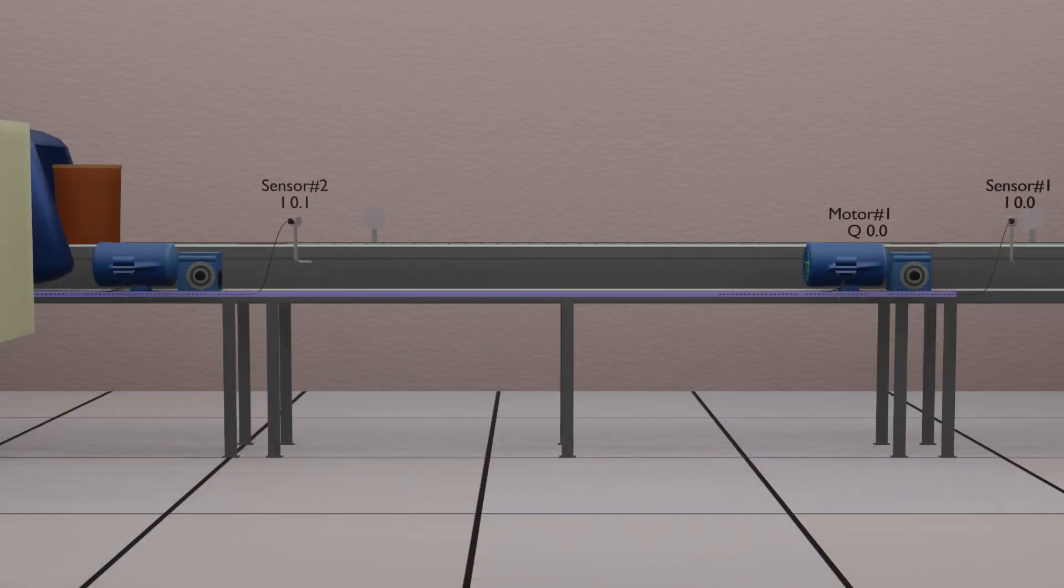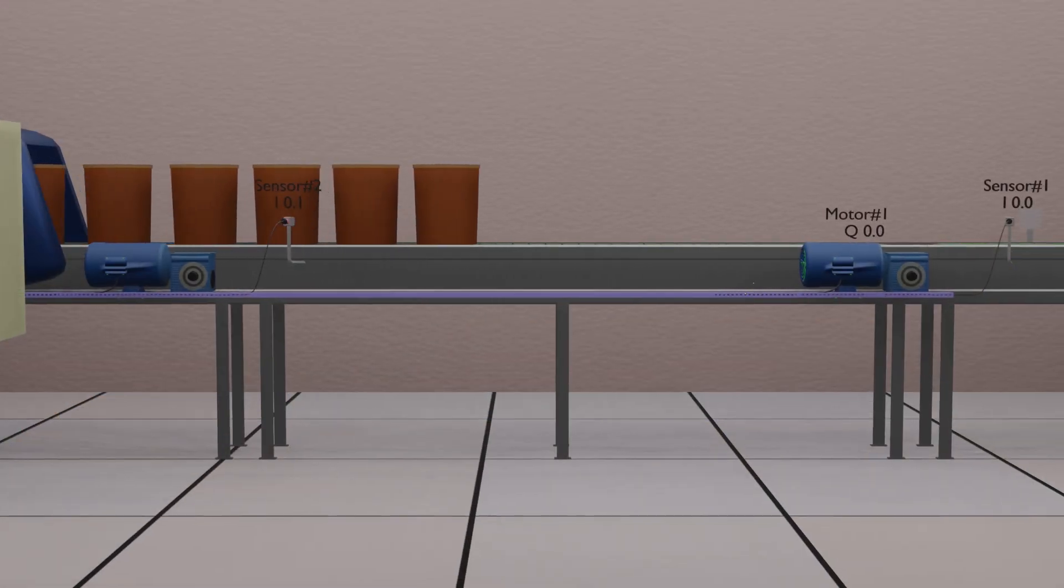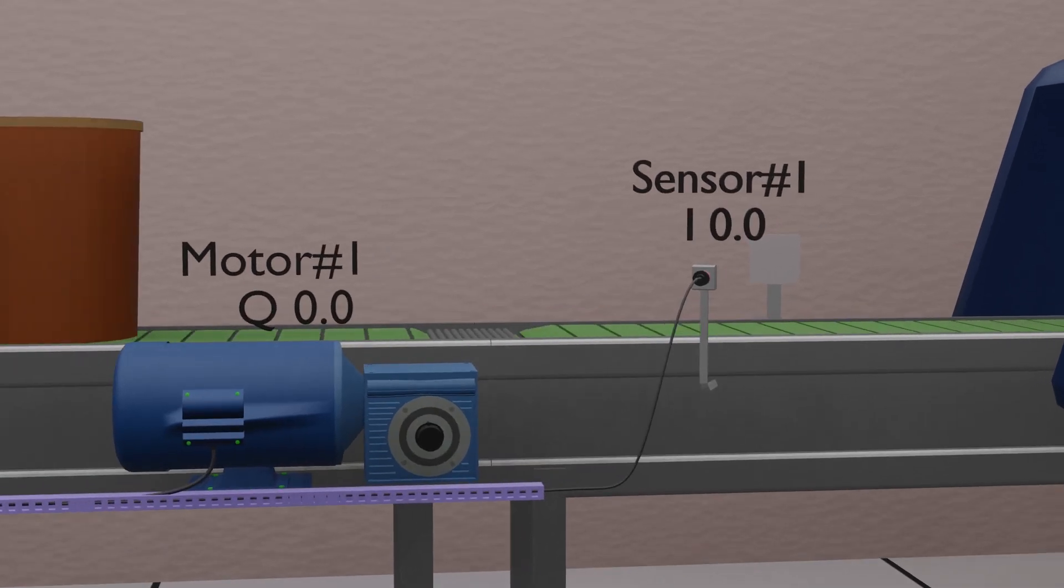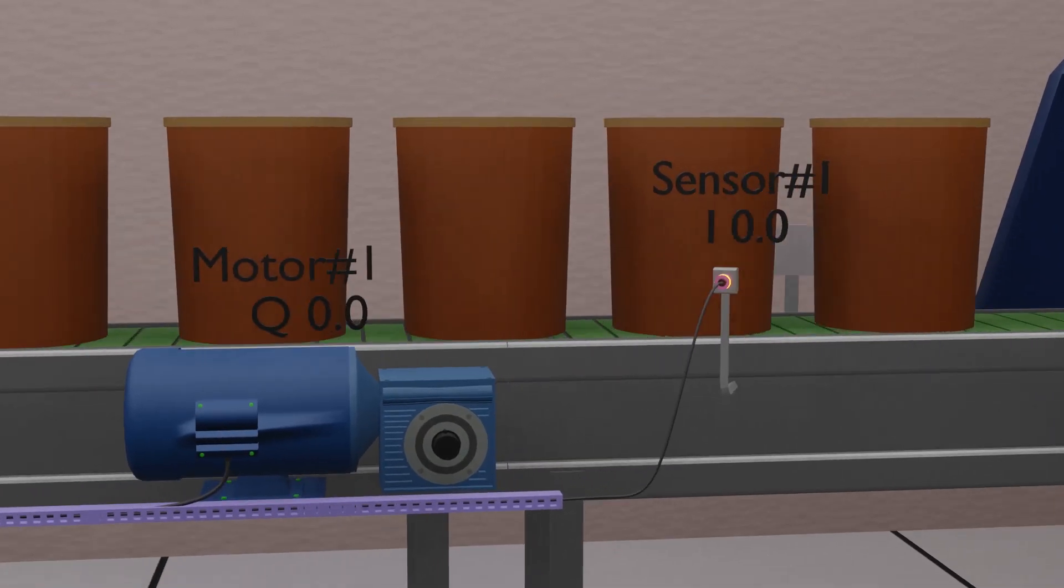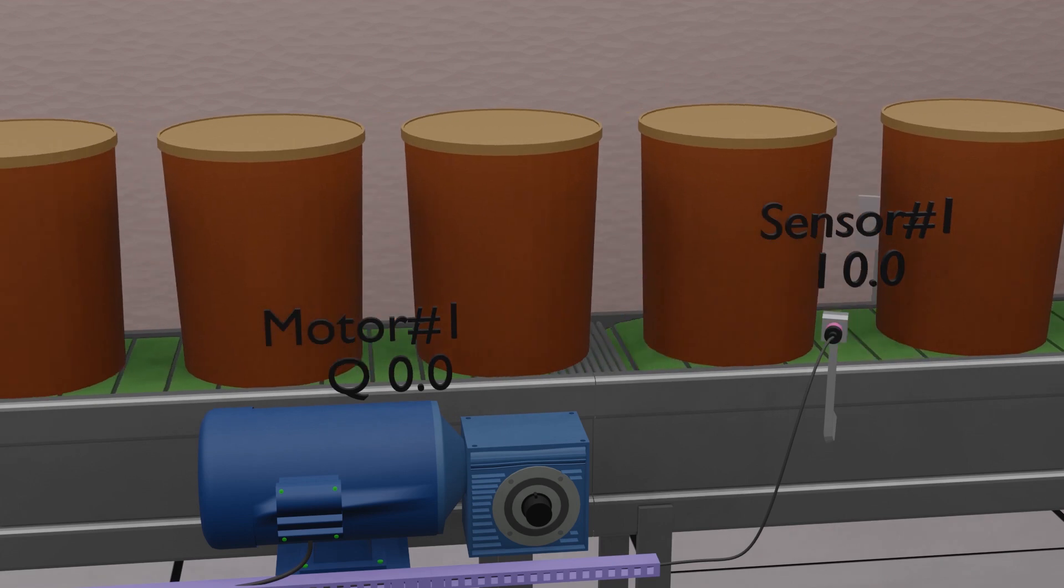First, we have installed sensor 1 on the machine inlet conveyor. This sensor will turn on every time a bucket comes in front of it. Sensor 1 is connected at PLC input I 0.0.